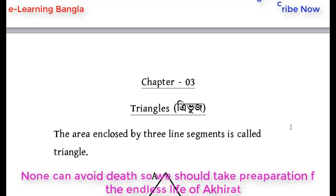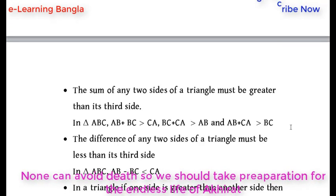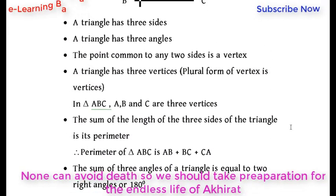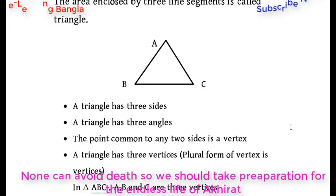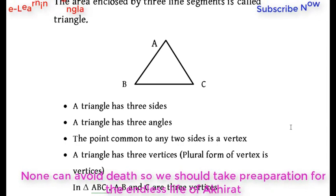The area enclosed by three line segments is called a triangle. The triangle has three sides and three angles.